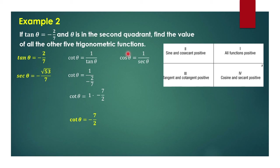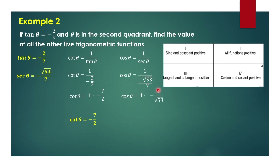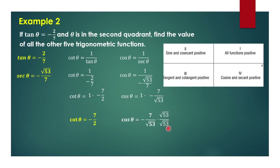For cosine of theta, we take 1 over secant of theta. So we have 1 over negative square root of 53 over 7, which equals 1 times negative 7 over square root of 53, giving us negative 7 over square root of 53. To rationalize, we multiply by square root of 53 over square root of 53, which gives us negative 7 square root of 53 over 53.